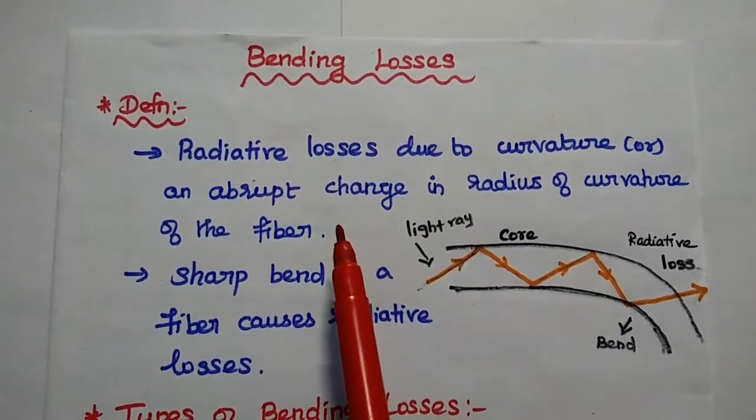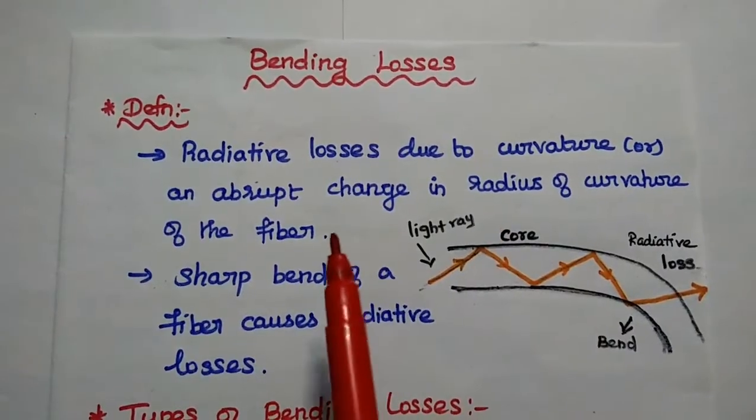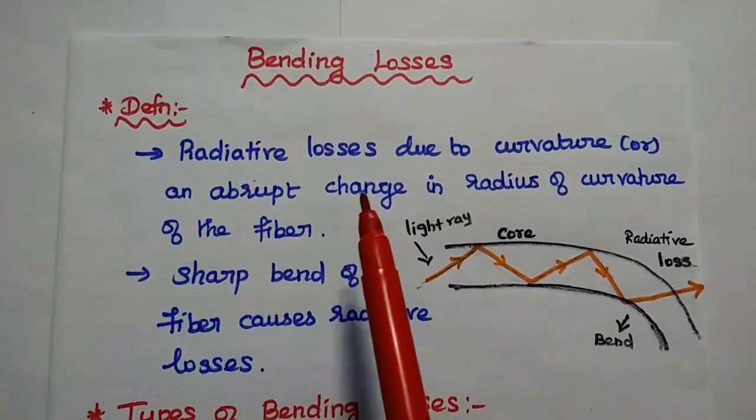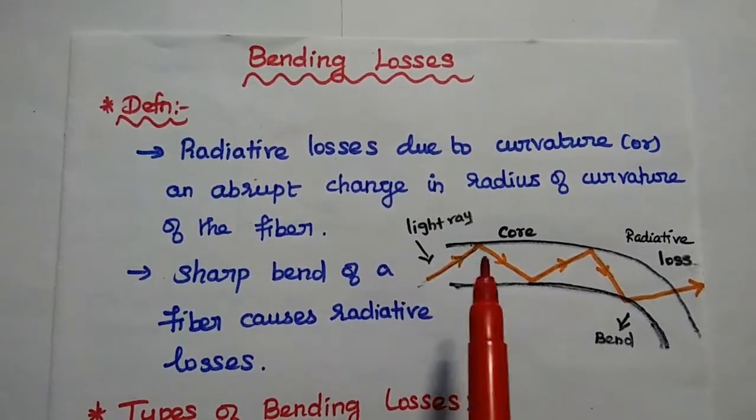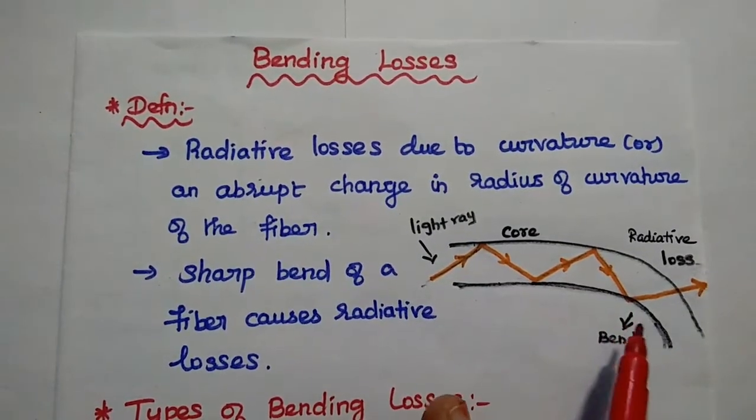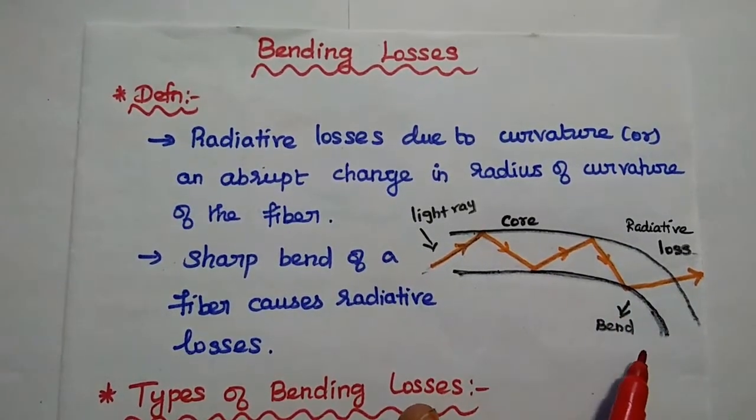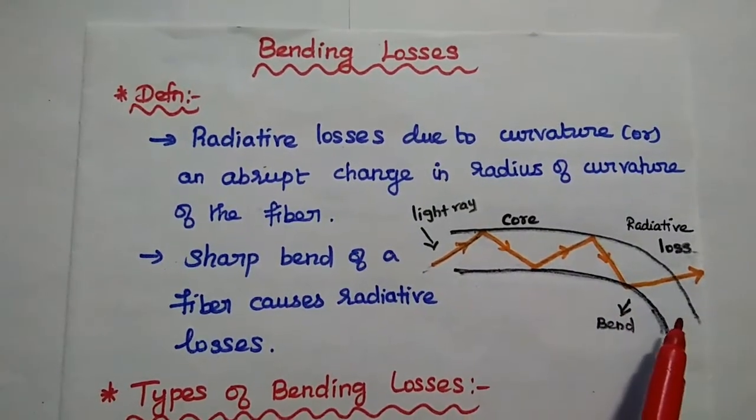Dear students, now we are going to discuss bending losses in optical fiber. Bending losses are the radiative losses due to the curvature or an abrupt change in the radius of the curvature of fiber. That means the sharp bend of a fiber causes radiative losses.